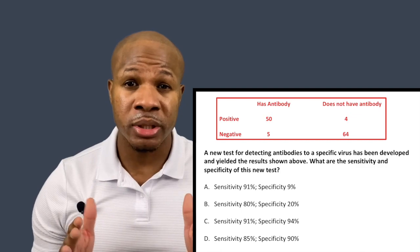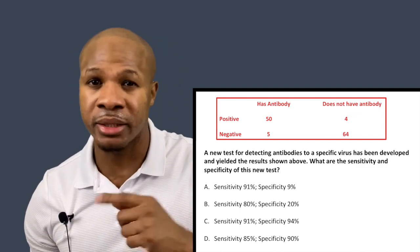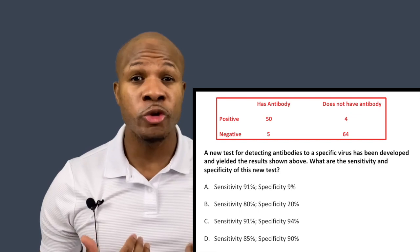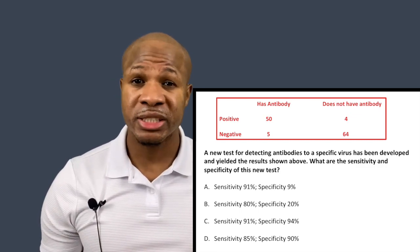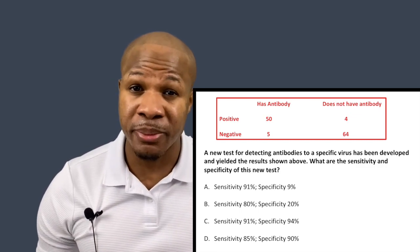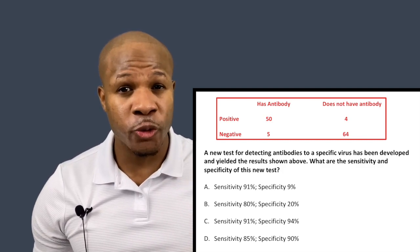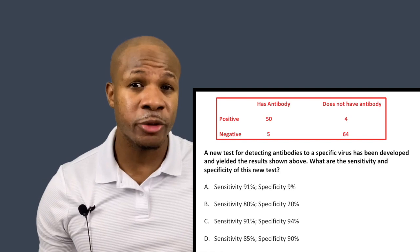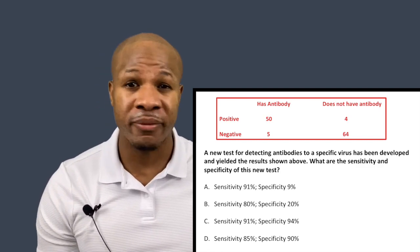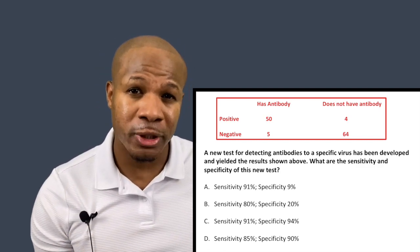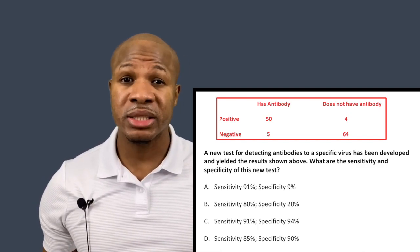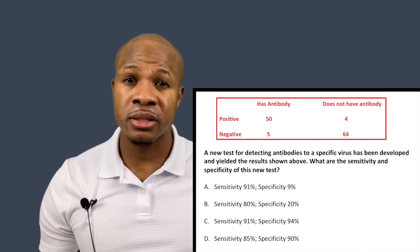For just about any patient who actually has the antibody, a sensitive test will detect it. On the other hand, if you don't have the antibody, you want the test to tell you that you don't have the antibody. If the test is really good at doing that, then it's a very specific test — it will not tell you that you have the antibody if you don't. It's specific only to people who actually have the antibody. Once we understand sensitivity and specificity, this problem is easy.